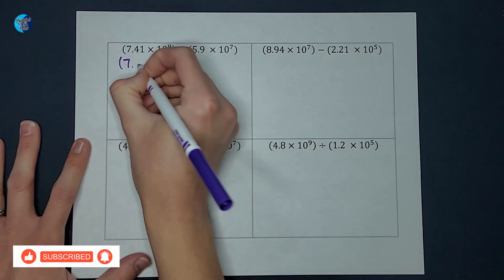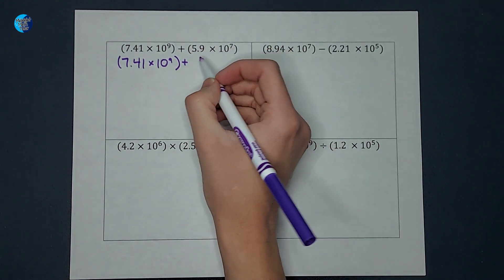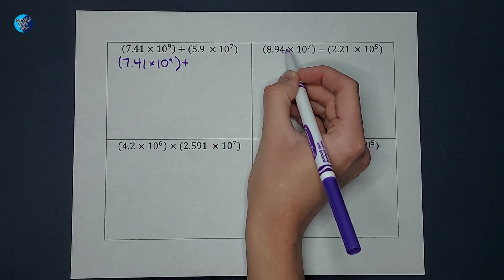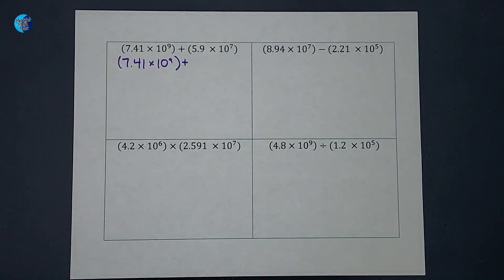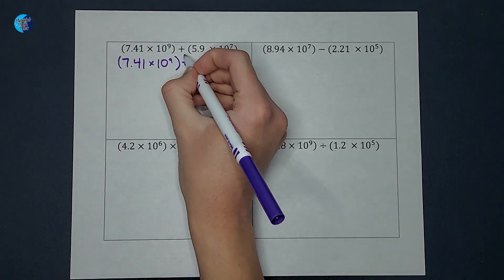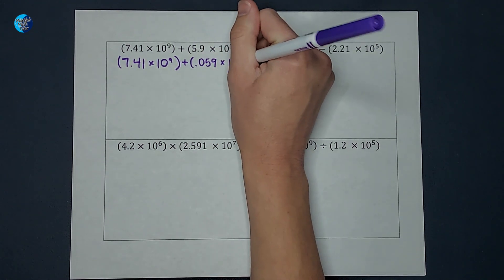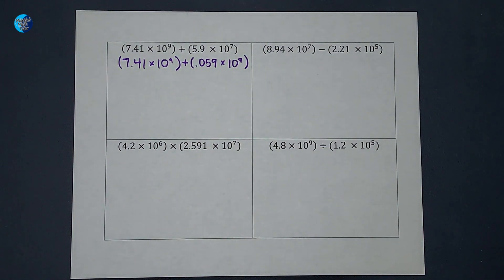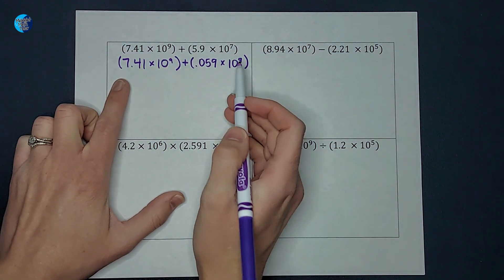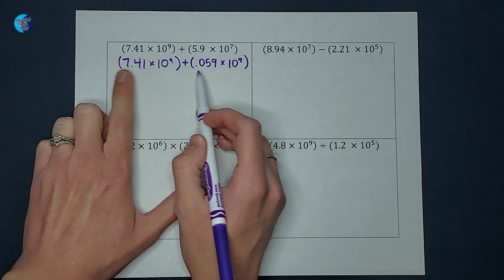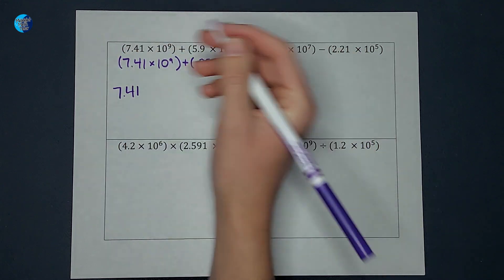I am going to change one number so it's 10 to the ninth, meaning 7.41 times 10 to the ninth stays the same. The other number is 10 to the seventh, meaning to get to that number I would move the decimal seven times. If I move it twice more, I would need to move it nine times total, giving me 0.059 times 10 to the ninth. If I go too fast, I will be linking videos where I go more in depth on each type of problem.